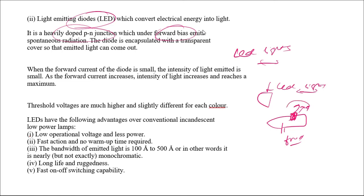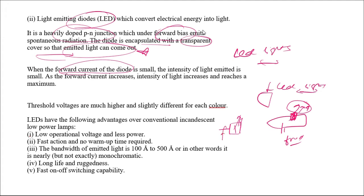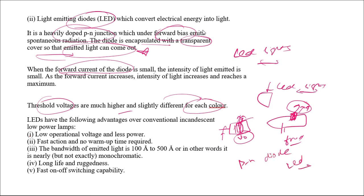The LED diode is manufactured such that when voltage is applied, light is generated. Like the photo diode, there is a transparent window through which light emits out. The diode is encapsulated in a transparent cover so the emitted light can come out. The forward current of the diode is small and the intensity of emitted light is small. Depending on the current flowing, the light intensity and the color of the emitted light will vary. The threshold voltage is higher due to the depletion region, and it varies for each different color.